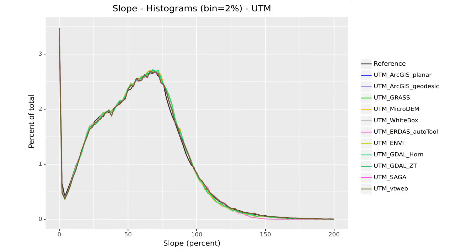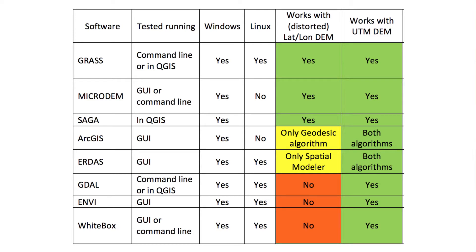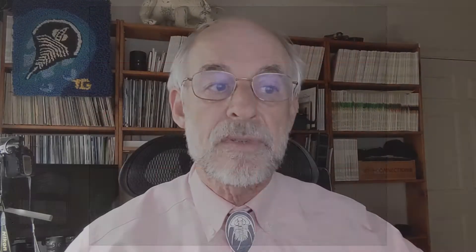We started with a UTM DEM, and all of the software we tested gave essentially the same results, shown by the slope histograms here. However, when we go to an arc-second DEM such as the five global DEMs, we get very different results with some of the software. Much of the software says that you should reinterpolate the DEM to UTM, which unfortunately introduces errors and changes the characteristics of the DEM. We've documented which software can correctly deal with arc-second DEMs and produce slope maps identical to a comparable UTM DEM. Finally, we've come up with a tiling mechanism to select 10-kilometer test areas to compare the different DEMs. This is approximately 10 kilometers in geographic spacing, and we change the size of the tiles in arc seconds as we approach the poles.